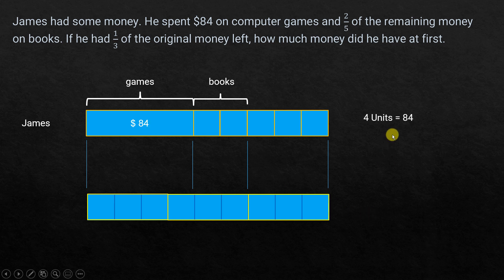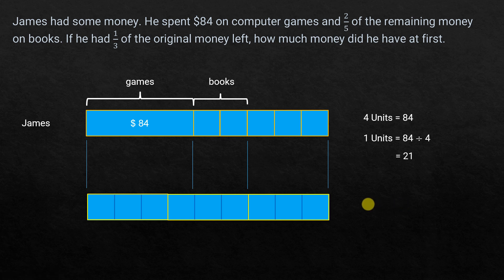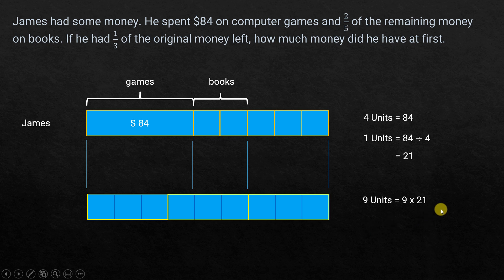So four units is equal to $84, which means one unit is 84 divided by 4, which gives 21. In total, the number of units is 3 plus 3 plus 3, which is 9 units. Nine units times 21 gives us 189.